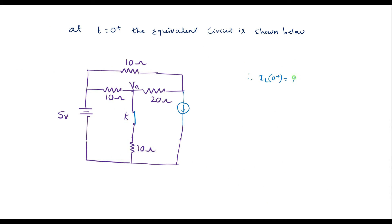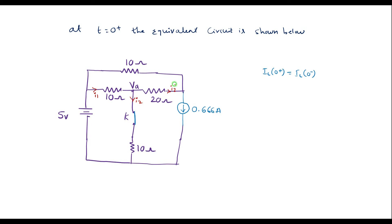This is because il(0+) equals il(0-), since the current through an inductor cannot change instantaneously after closing the switch. So the magnitude of the current source is 0.666 amps. Now we will find the voltage at node va at t equal to zero plus. Let me solve this using Kirchhoff's current law. Let the current through each branch be i1, i2, i3, and i4. Applying KCL at node va.